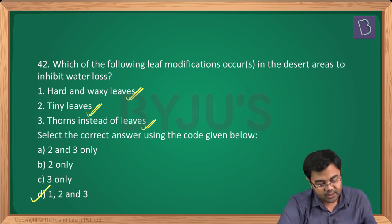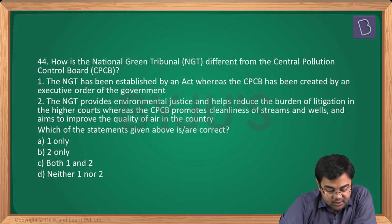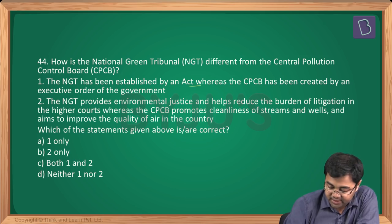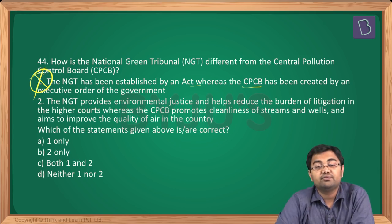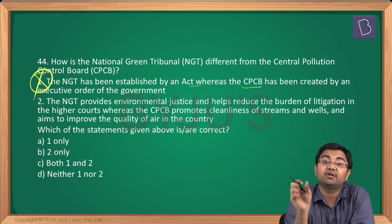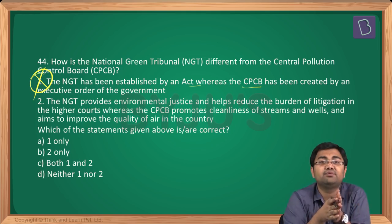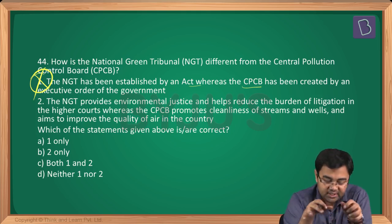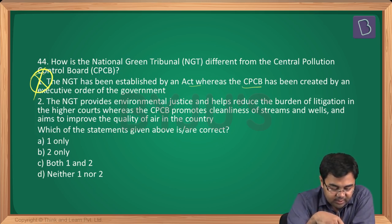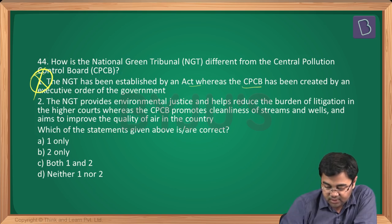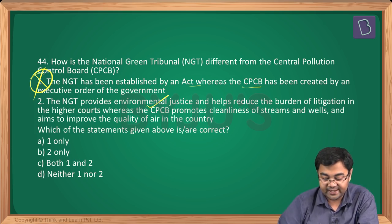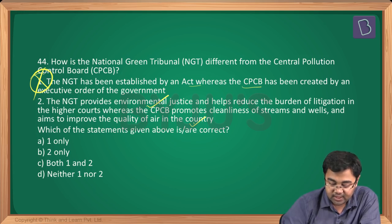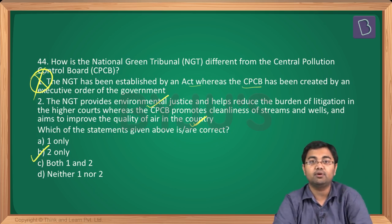Question number 44: how is the National Green Tribunal different from the Central Pollution Control Board? Statement 1 says NGT was established by an act whereas CPCB was created by an executive order — wrong. CPCB is a statutory organization constituted in 1974 under the Water Act. Statement 2 says NGT provides environmental justice and reduces litigation burden in higher courts, while CPCB promotes cleanliness of streams and wells and improves air quality — this is true. So statement 2 is correct, and the answer is B.